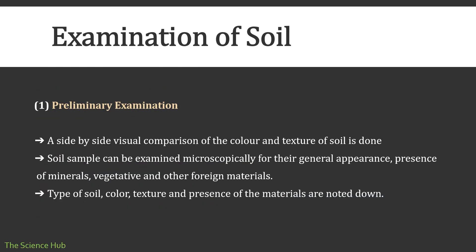First, preliminary examination: a side-by-side visual comparison of the color and texture of the soil is done. The soil sample can be examined microscopically for general appearance, richness, and presence of minerals, vegetative and other foreign materials. The type of soil, color, texture, and presence of materials are noted down.